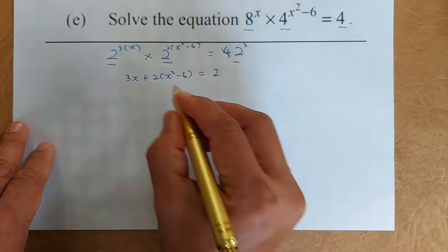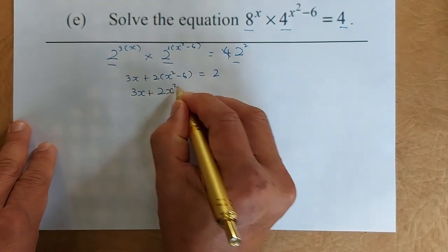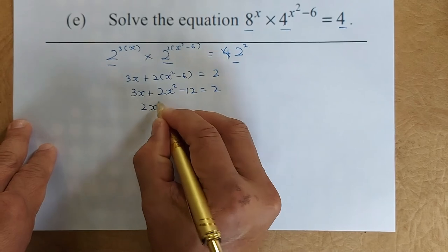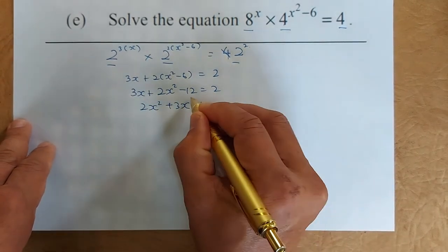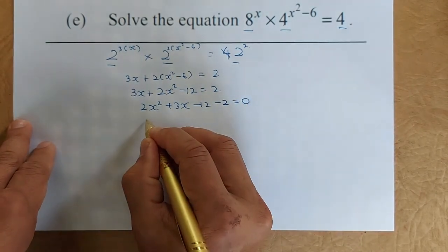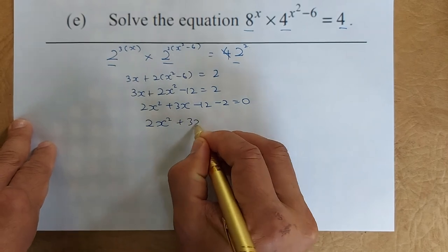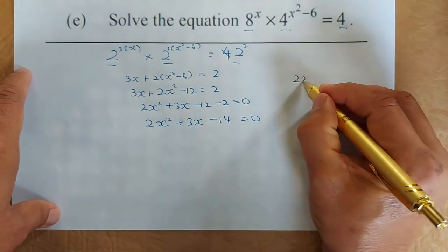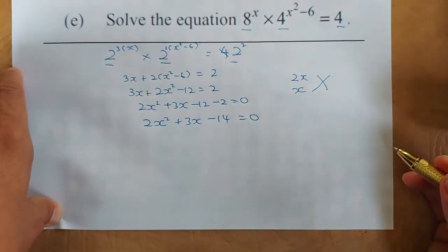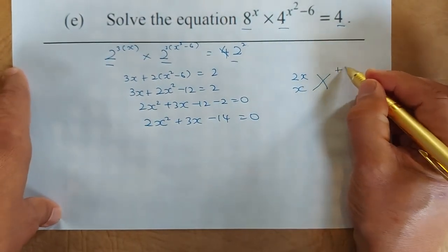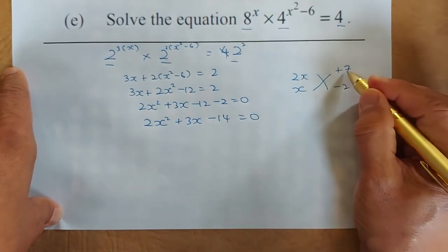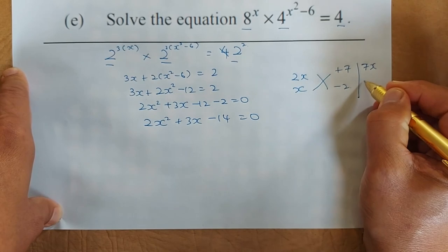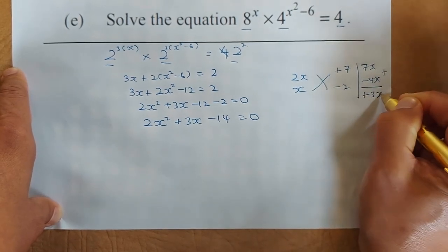Simplifying algebraically: 3x plus 2x squared minus 12 equals 2. Rearranging: 2x squared plus 3x minus 12, then subtract 2 on both sides, giving 2x squared plus 3x minus 14 equals 0. Now factorize: 2x and x. Using trial and error, the factors are (2x plus 7)(x minus 2), because 7 times minus 2 is minus 14, and 7x minus 4x gives plus 3x in the middle.